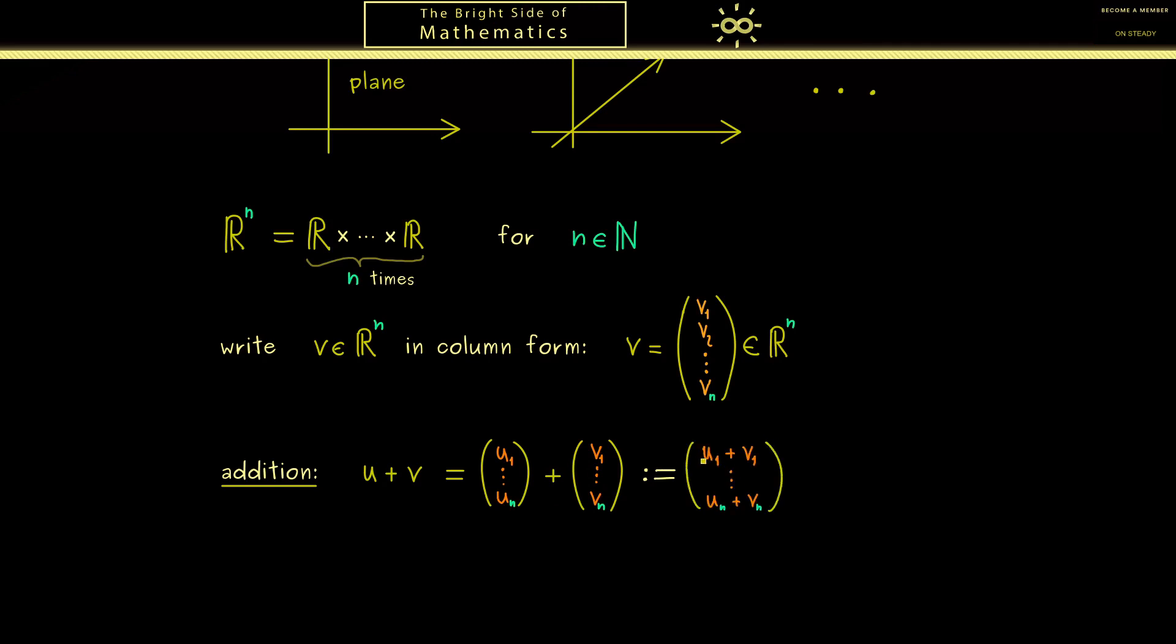Hence the definition of the addition is the same, just with more entries. So we have u1 plus v1, u2 plus v2, and so on until we reach un plus vn. So this is the resulting vector in R^n given by the vector addition.